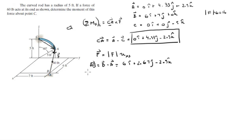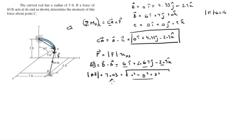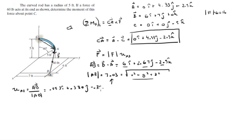We find the magnitude of AB by taking the square root of the x-component squared plus the y-component squared plus the z-component squared. Plugging in these numbers gives a magnitude of 7.03. The unit vector UAB is then the vector AB divided by its magnitude 7.03, giving us 0.853i plus 0.380j minus 0.356k.